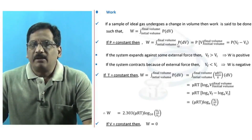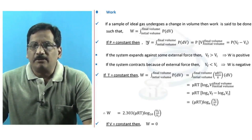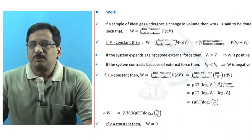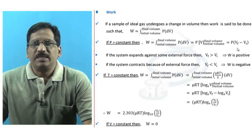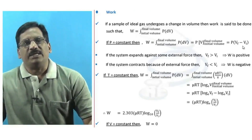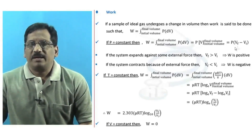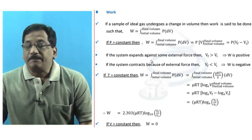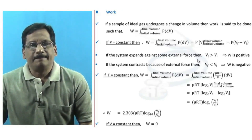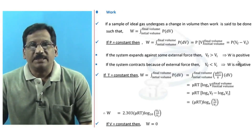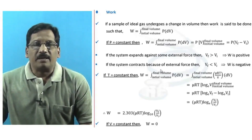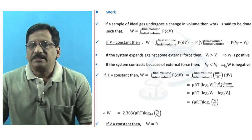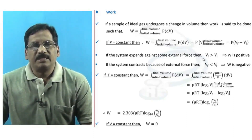At constant pressure, since P is constant it can be taken out of the integration: W = P∫dV = P(Vf − Vi). If the system expands against an external agency, then Vf > Vi and work is positive — work is done by the system. If the system contracts due to external agency influence, Vf < Vi and work is negative — work is done on the system.